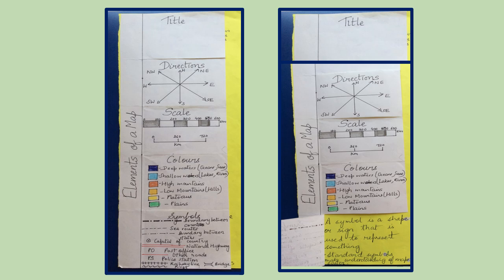For a capital of a country, we have a circle with a dot inside. For national highway, we have two parallel red lines. P.O. stands for post office. A single red line for other roads. P.S. stands for police station.